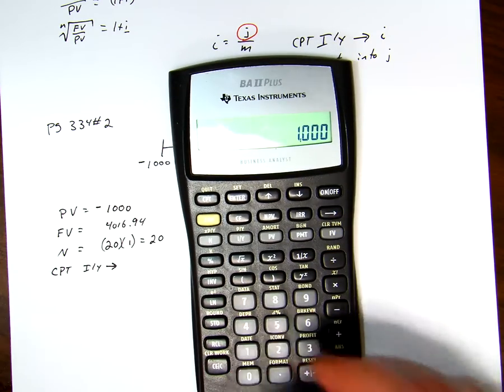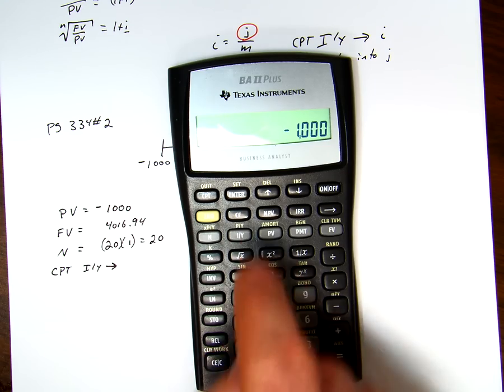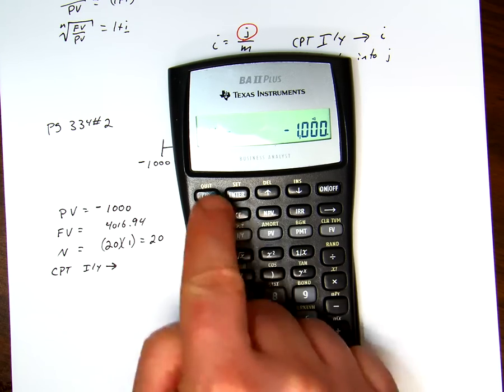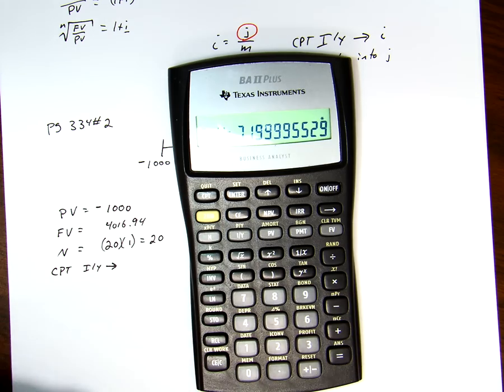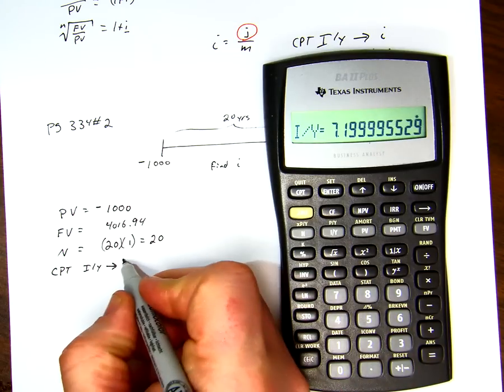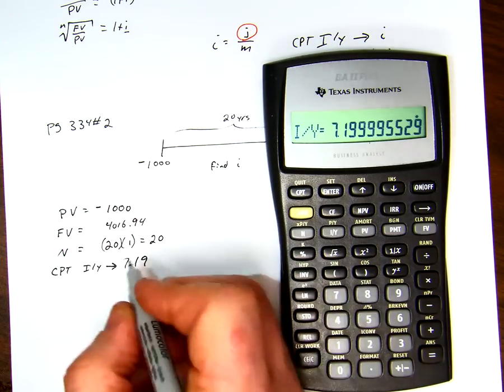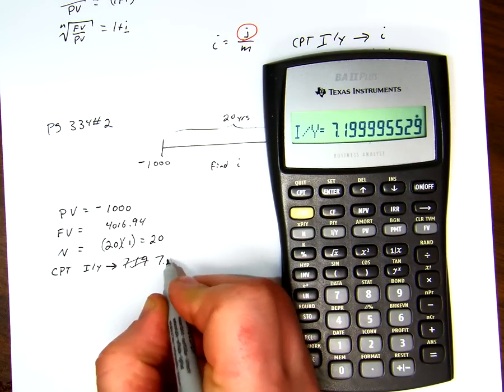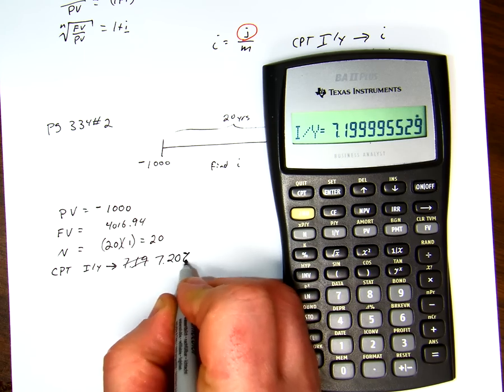So you've got $1,000 negative. That's going to be our present value. Now we can compute i per y, and it says 7.1999999, 7.20%.